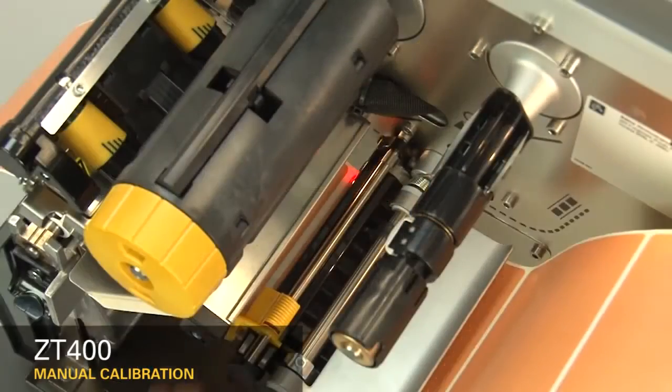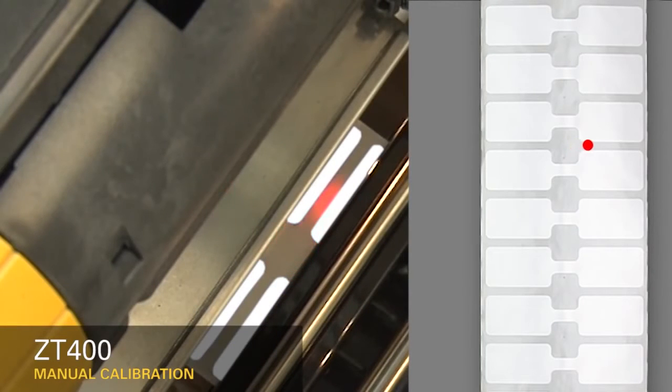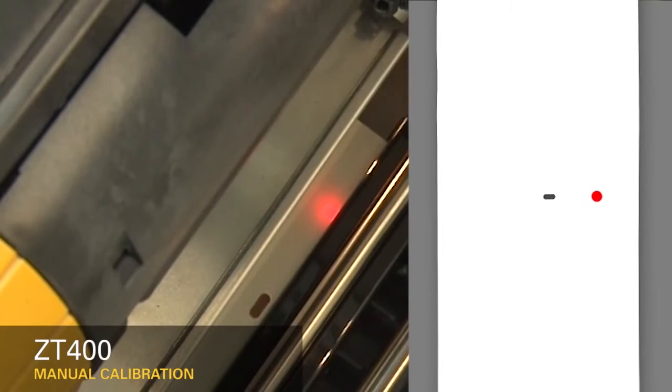If you're using media with a gap, also referred to as a web, or hole or notch, you'll want to make sure your sensor is in the optimal position to identify that feature. Move the sensor to a location where the light passes through the notch or hole. Try to avoid locating the sensor under the hole or notch radius.